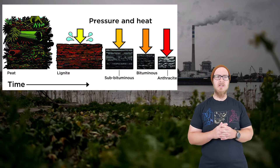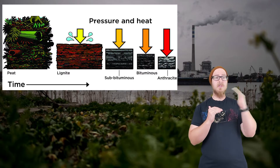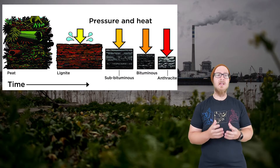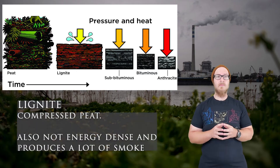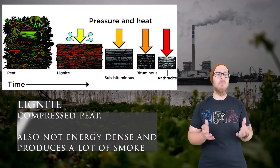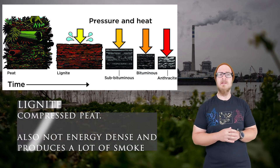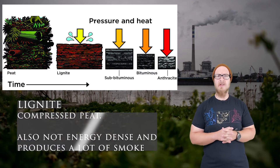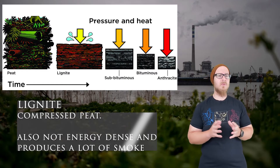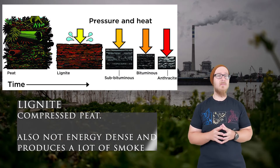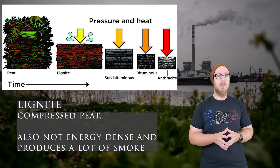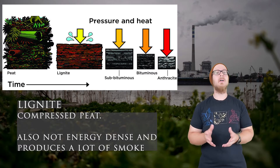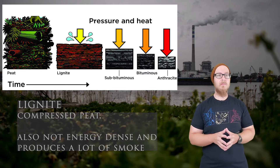As sedimentation continues and material is piled on top of peat, the heat and pressure produces lignite. Lignite is best described as compressed peat. It's a poor source of energy — not very energy dense — and also creates very high emissions of CO2 and particulates when burned, but it is definitely better to burn than peat.